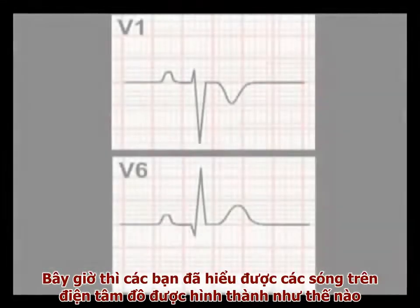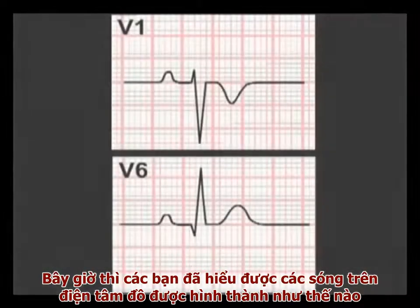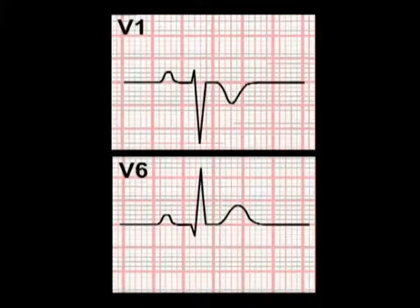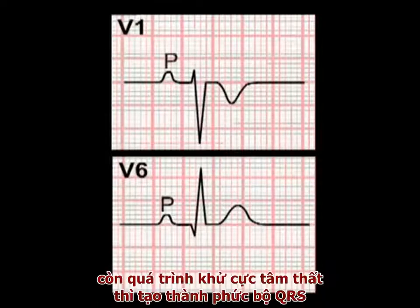Now that you understand how the ECG readout in an individual lead is generated, we need to make sure that you are familiar with the nomenclature of this readout. Remember, the deflection produced by atrial depolarisation is termed a P-wave, while ventricular depolarisation produces the QRS complex.